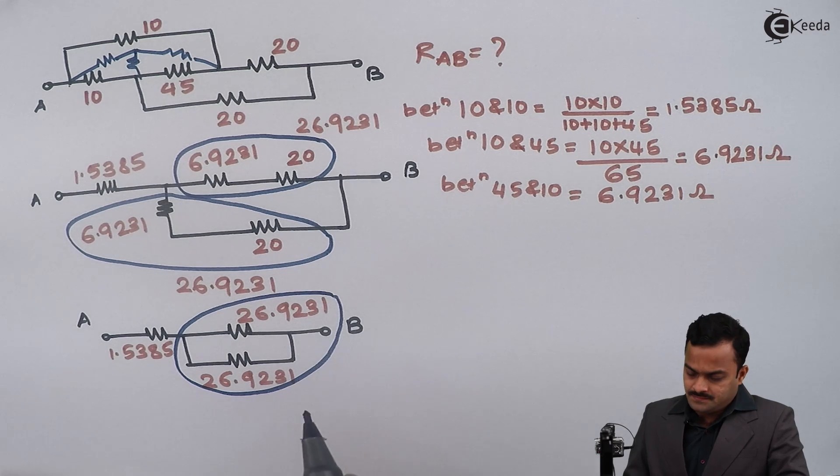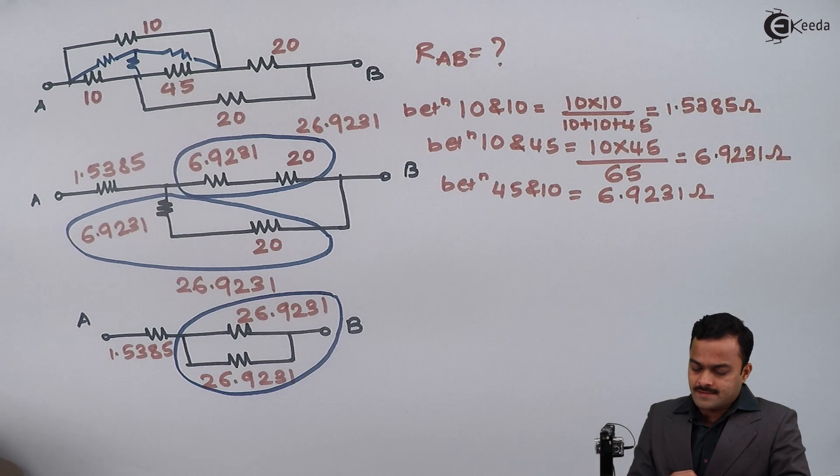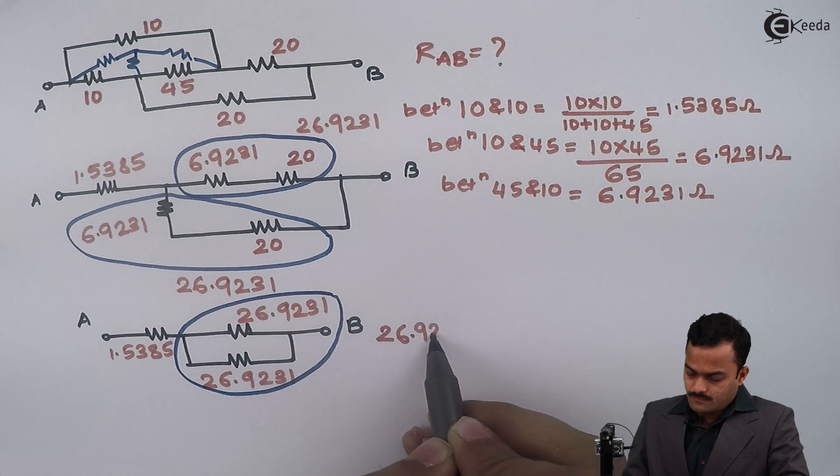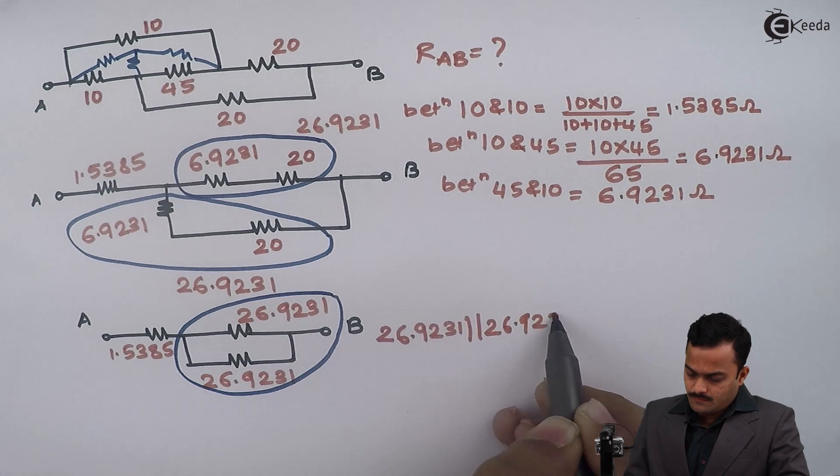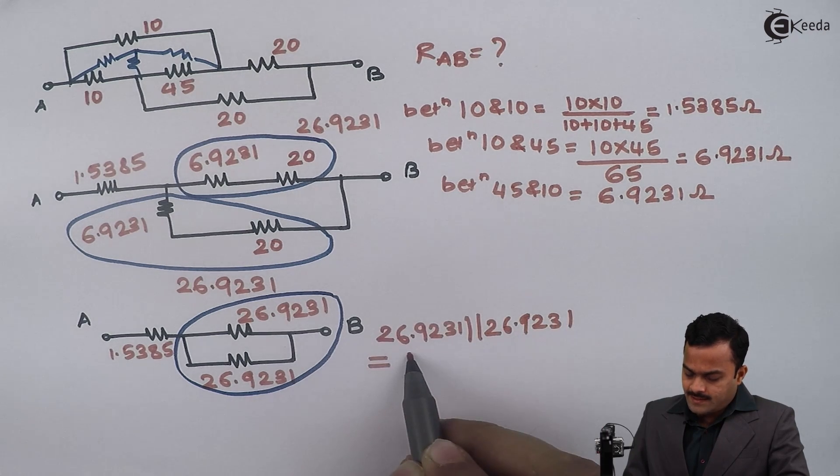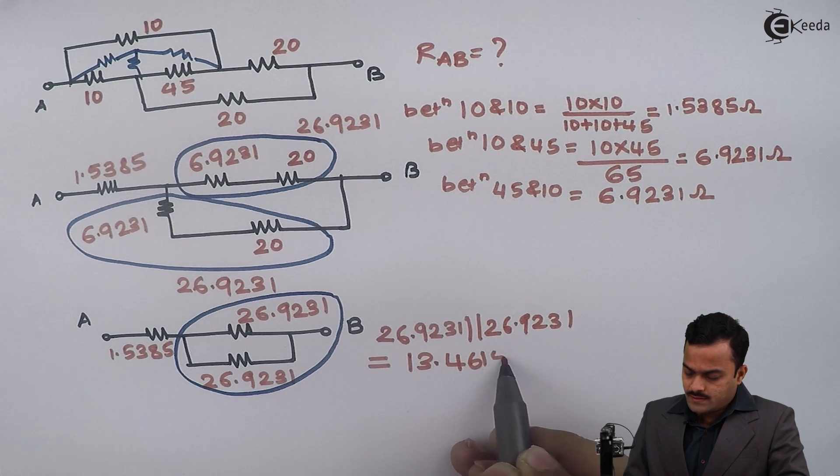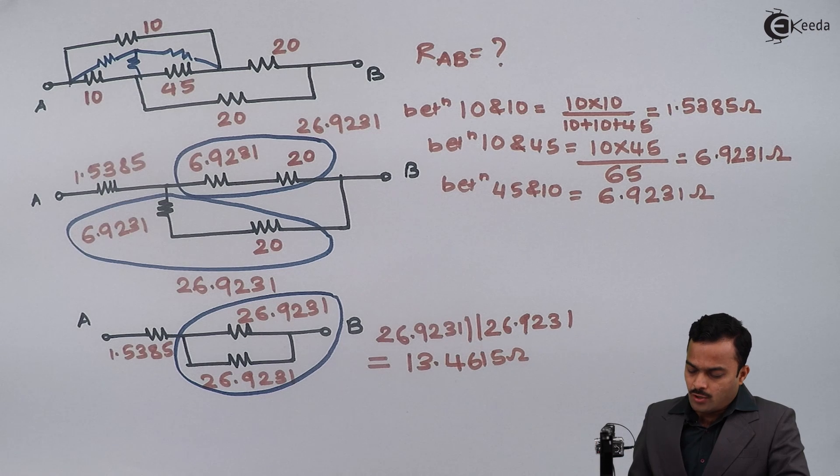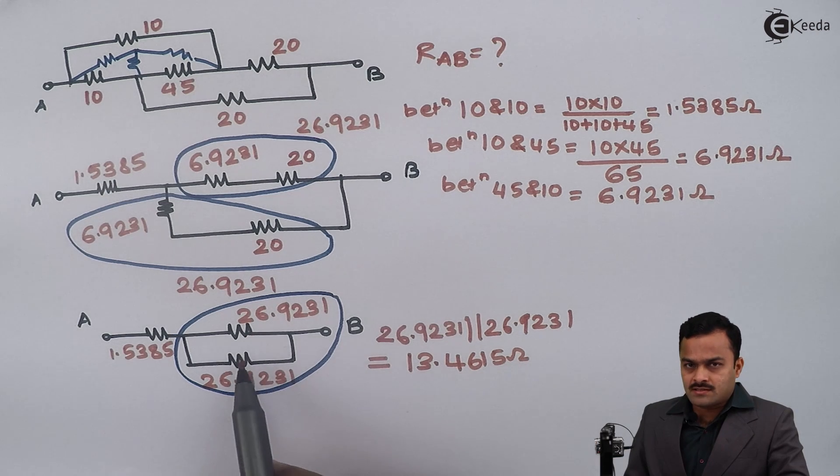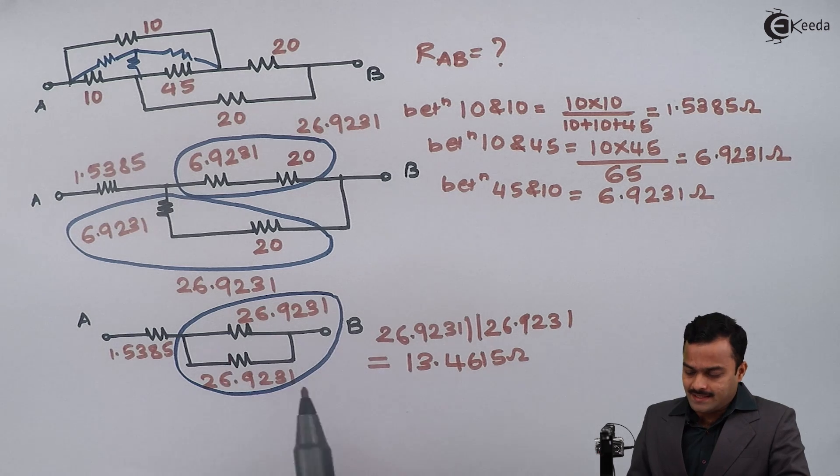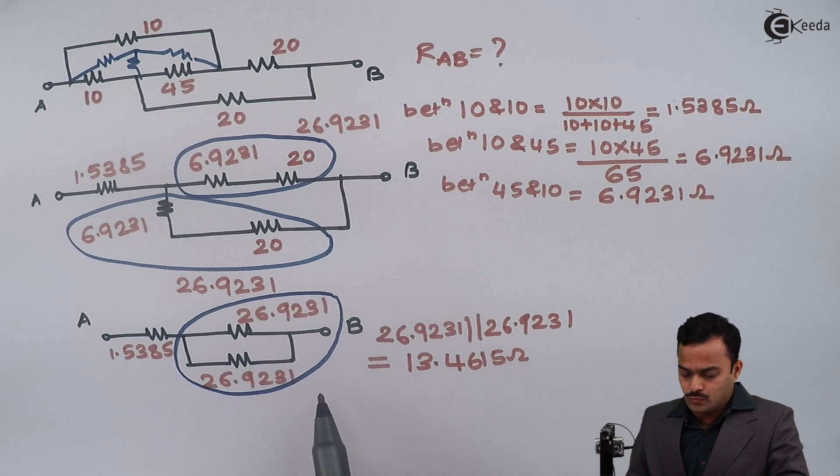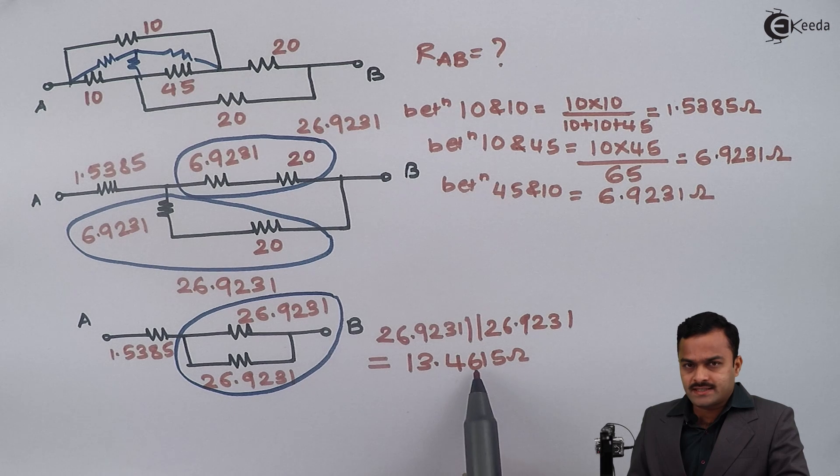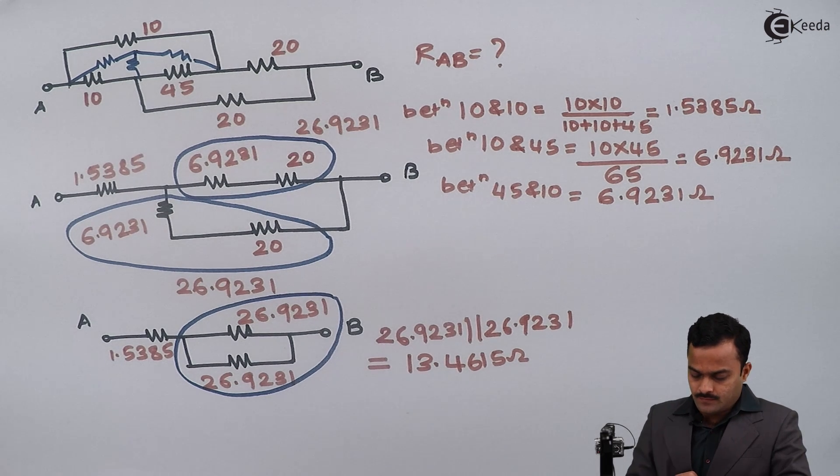I can get direct answer 13.4615 ohm because these two resistors are of the same value and are in parallel. So I can say the equivalent is just divided by 2. So I'll get 13.4615, and then this resistance will come in series with 1.5385.